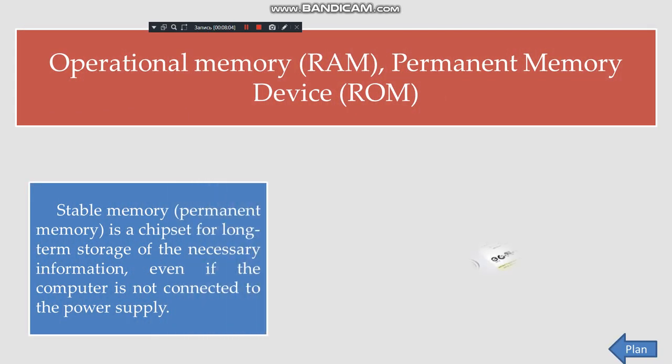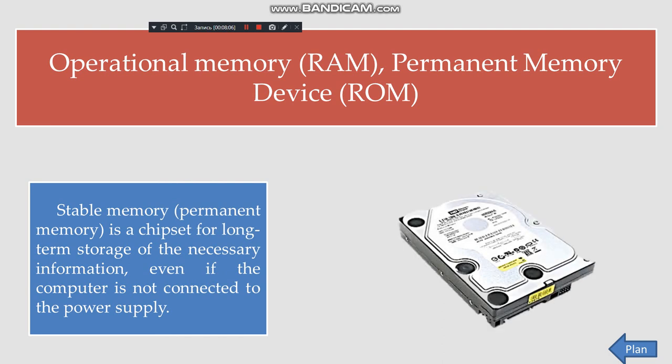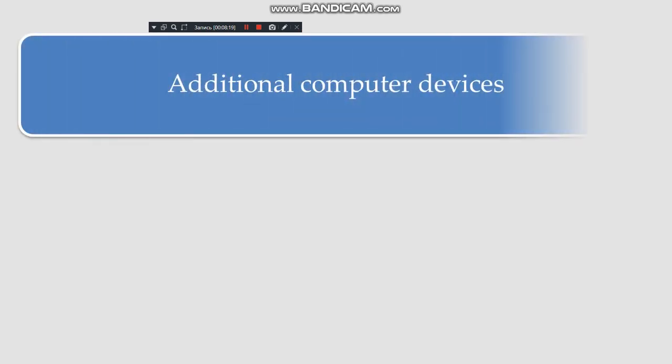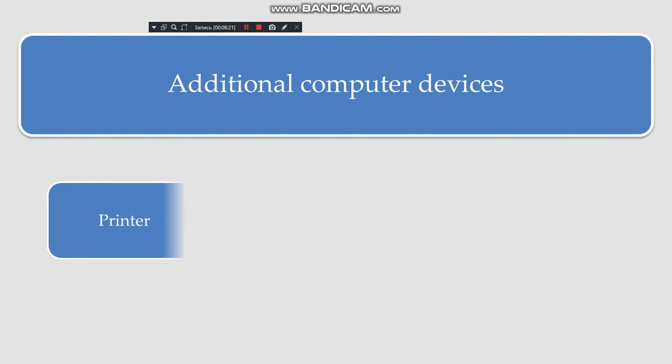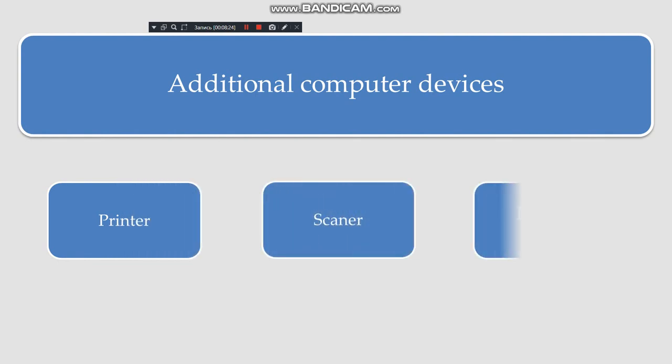Permanent memory is a chipset for long-term storage of necessary information, even if the computer is not connected to the power supply. Additional devices include a printer, scanner, and modem.